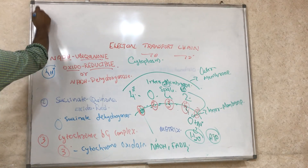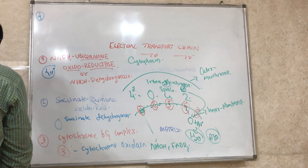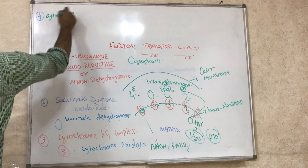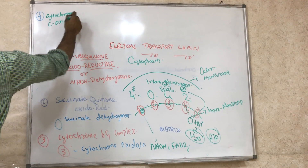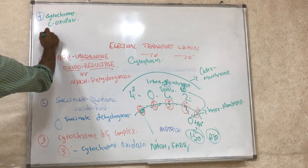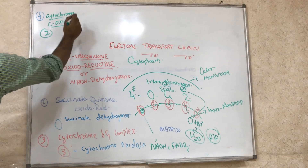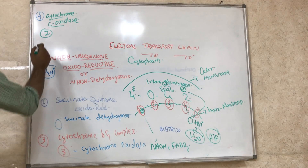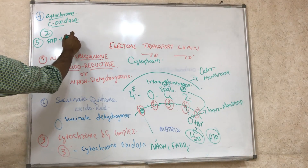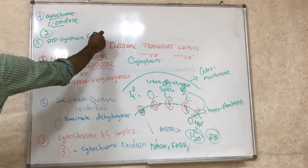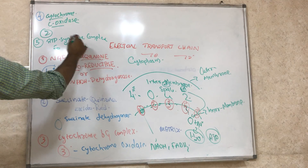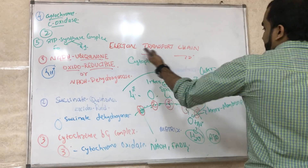The fourth complex is called cytochrome C oxidase. It helps keep complexes 3 and 4 together and pumps 2 H+ out. The fifth complex is called the ATP synthase complex — it is the fan responsible for making ATP. It contains two units: F0 and F1 particles. These are the five complexes and this is how ETC works.